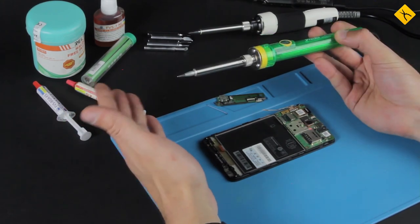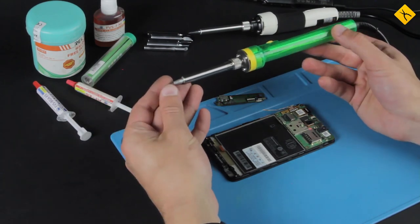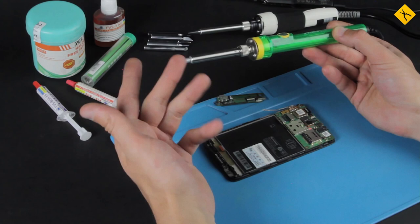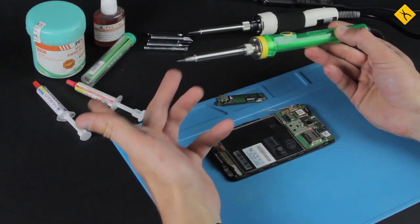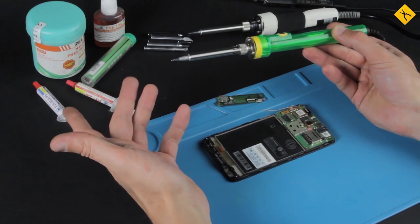Its only downside is the limited selection of removable tips. It comes with a standard conical tip and two bevel tips with a diameter of 2 and 3 millimeters. The manufacturer doesn't provide other tips for it.